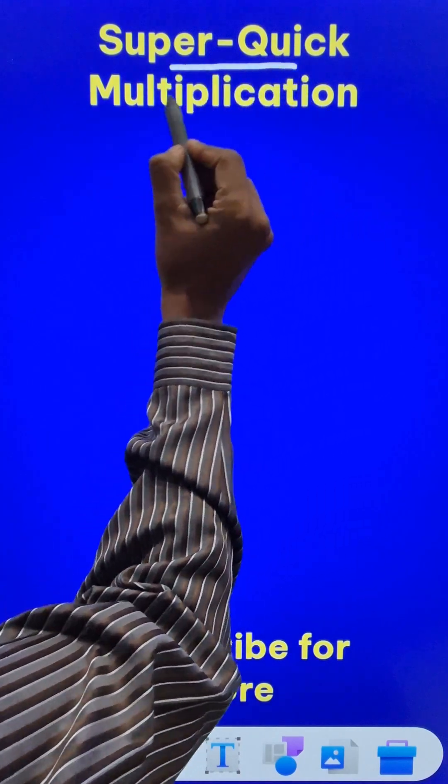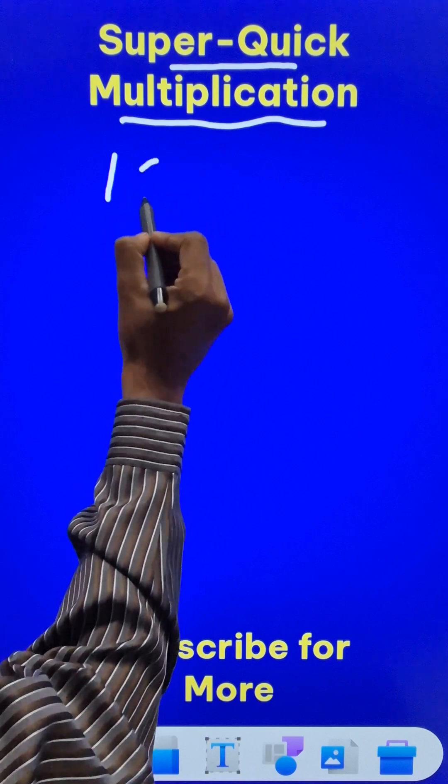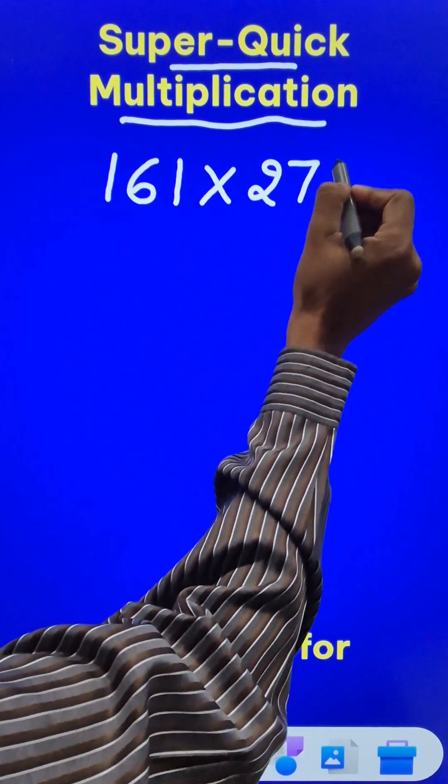Here is a super quick multiplication trick for all the maths lovers. Suppose you have to multiply 161 by 271.